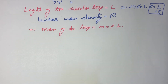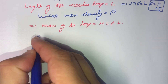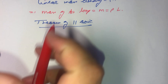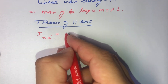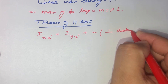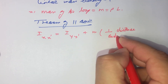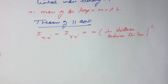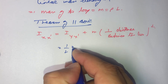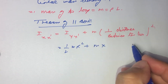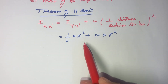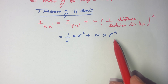Now we are going to use the theorem of parallel axis. So the moment of inertia about x-x' will be equal to moment of inertia about y-y' plus mass multiplied by the perpendicular distance between the two axes, whole squared. The perpendicular distance between the two axes is nothing but the radius.